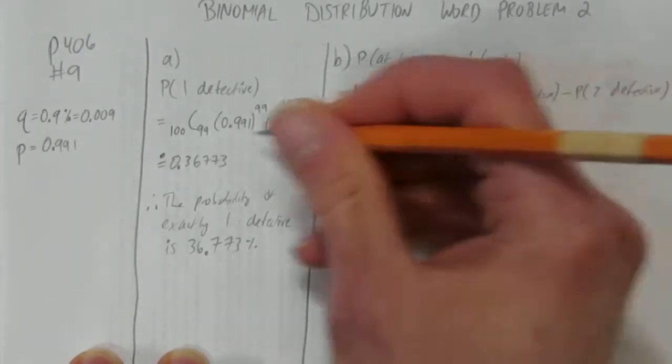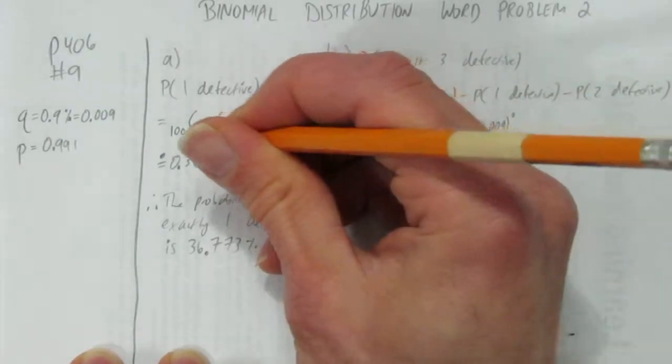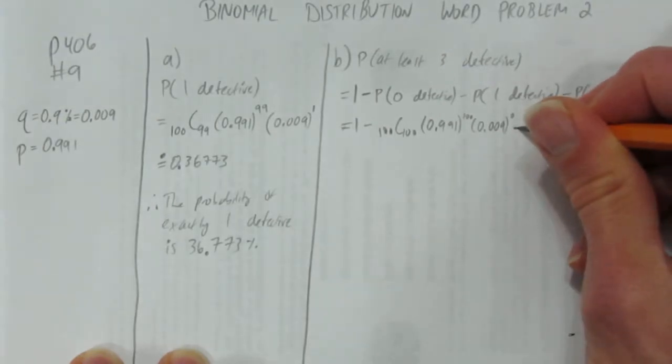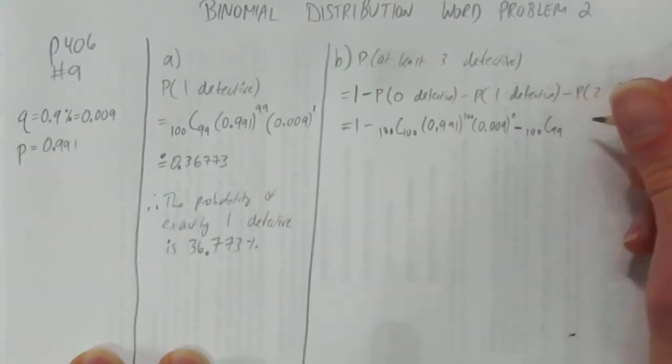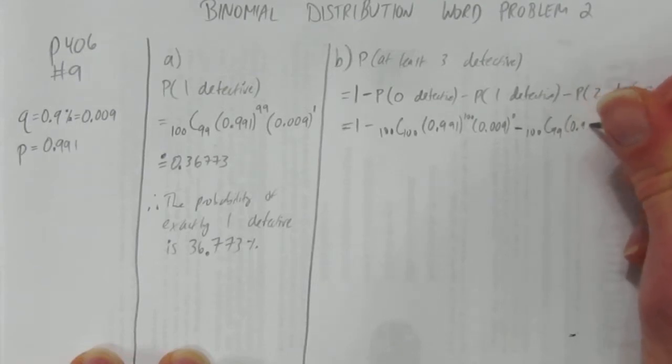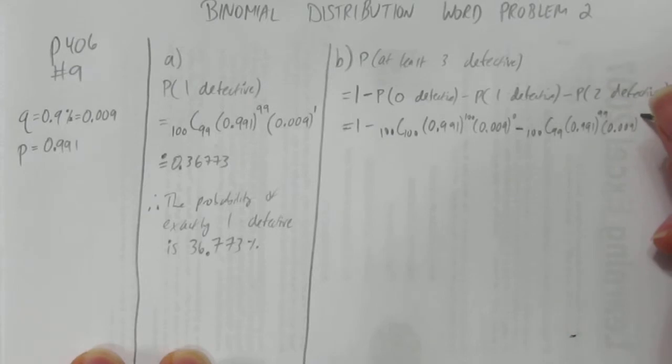And we'll set it up again for 1 defective. It's the same as last time, and you can just read this right here. We'll go through it again. You have 100 chips, choose 99 of them to be effective, so that's 0.991 to the power of 99, and then the failure of 0.009 happens once.